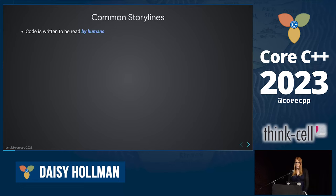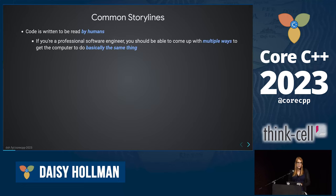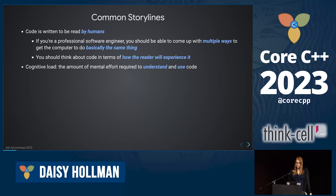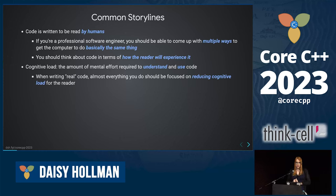Code is meant to be read by humans. If you are a professional software engineer, which most people here are, you should be able to come up with multiple ways to get your computer to do basically the same thing. Software engineering is really the practice of incorporating how the reader will experience that code into your decision as to which of the ways you express something. I'm also going to talk about cognitive load a lot — the amount of mental effort required to understand and use code. Reducing cognitive load should be your number one goal in any real code you write.